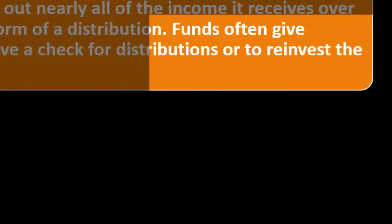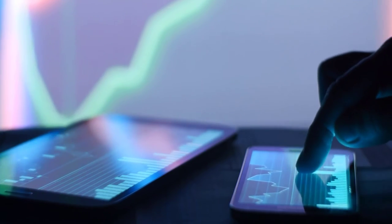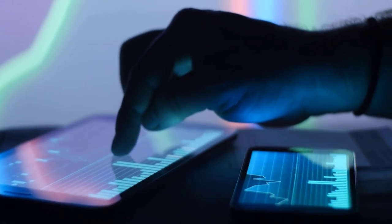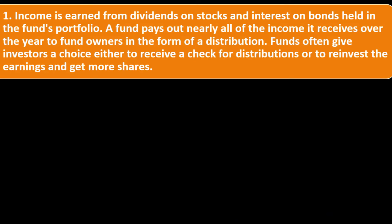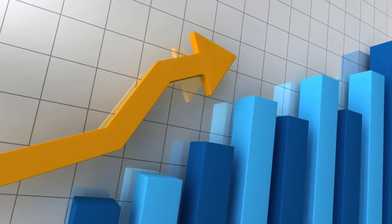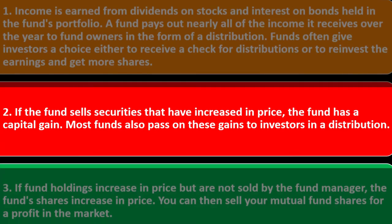Investors typically earn a return from a mutual fund in three ways. Number one: income is earned from dividends on stocks and interest on bonds held in the fund's portfolio — just like if you invested in stocks directly. A fund pays out nearly all the income it receives over the year to fund owners in the form of distributions. Funds often give investors a choice: receive a check for distributions or reinvest the earnings to get more shares. Number two: if the fund sells securities that have increased in price, the fund has a capital gain, and most funds pass these gains to investors in distributions.